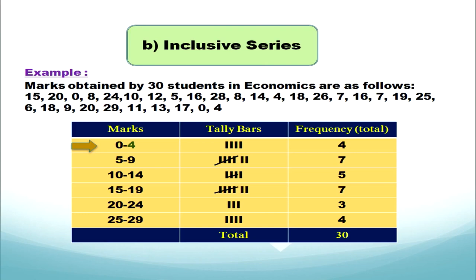The difference between exclusive and inclusive series: in exclusive series the upper limit is not counted in the class, whereas in inclusive series both lower and upper limits are counted to make tally bars. In exclusive series the upper limit of the previous class equals the next lower limit, whereas in inclusive series the upper limit of the previous class does not equal the lower limit of the next class.